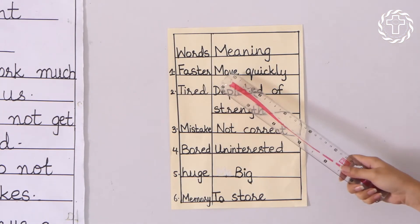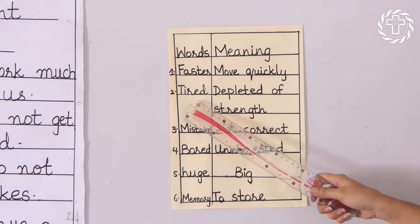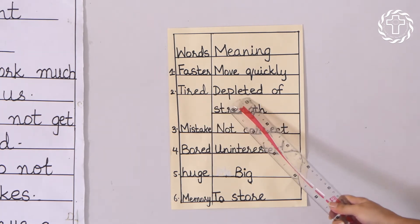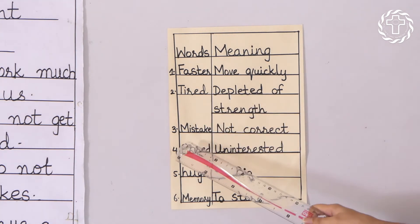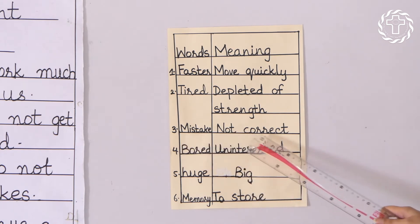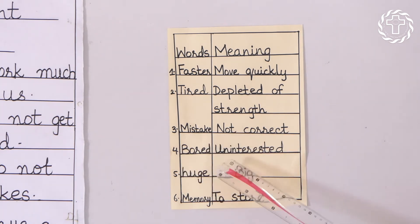Words and meanings: faster means move quickly, tired means depleted of strength, mistake means not correct, bored means uninterested, huge means big, memory means to store.